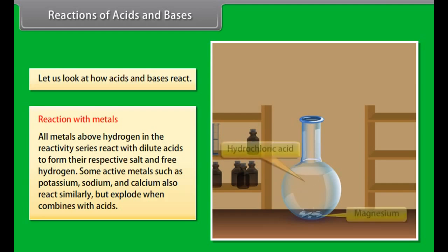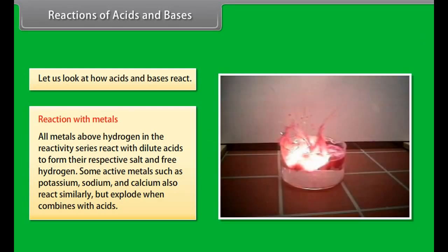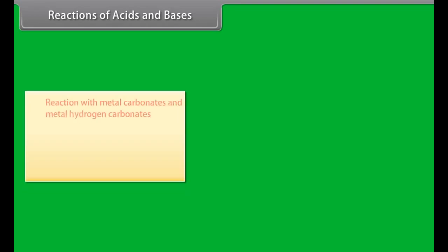Let us look at the different reactions of acids and bases with metals, metal carbonates, and metal hydrogen carbonates, and with each other. Reaction with metals. All metals above hydrogen in the reactivity series react with dilute acids to form their respective salt and free hydrogen.